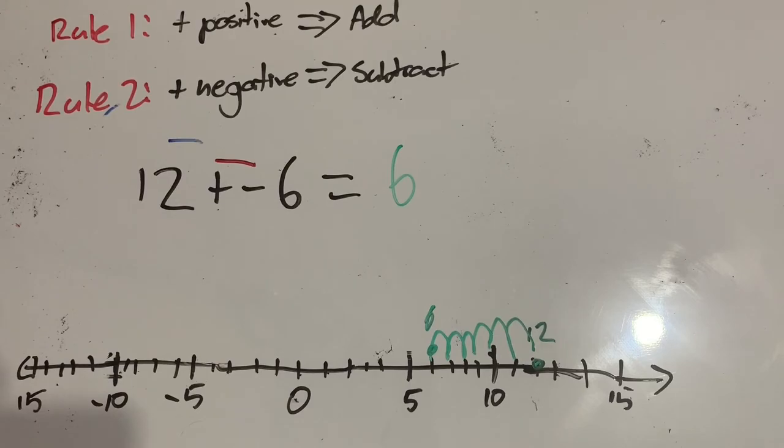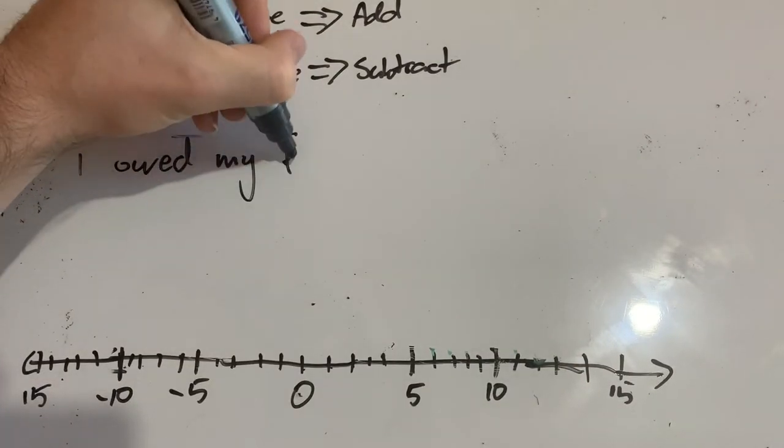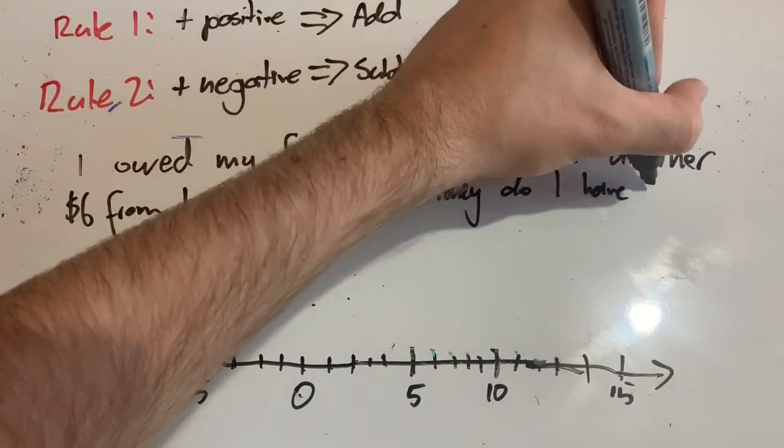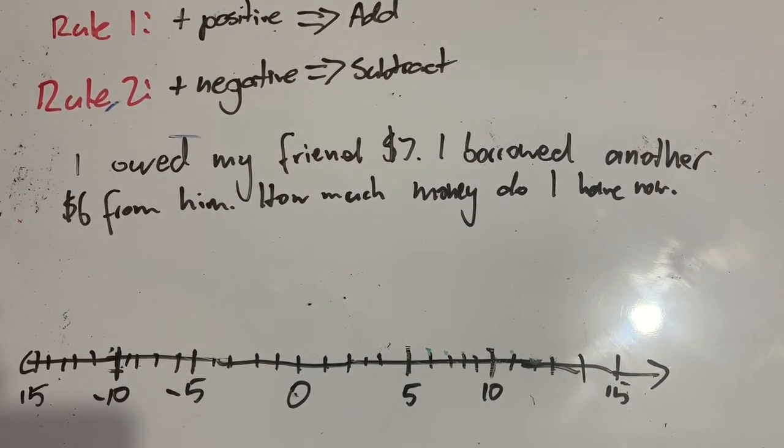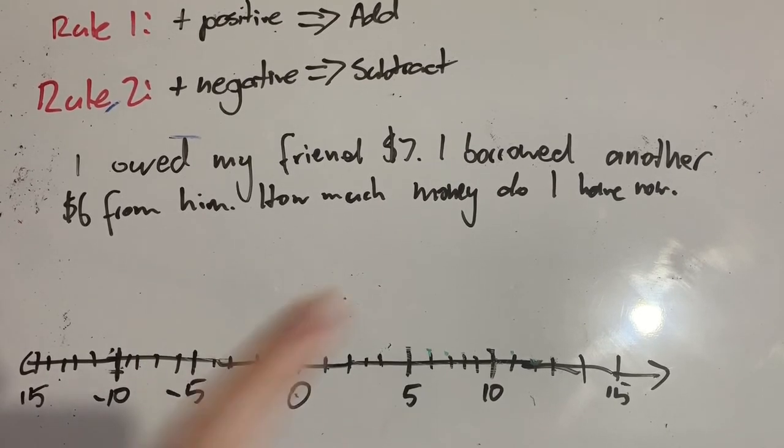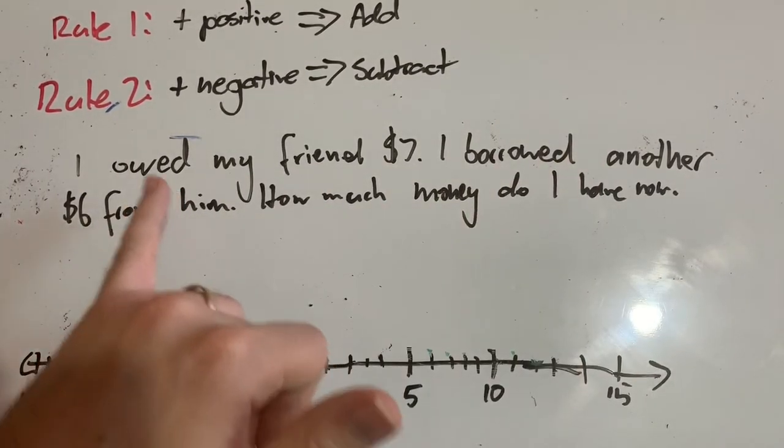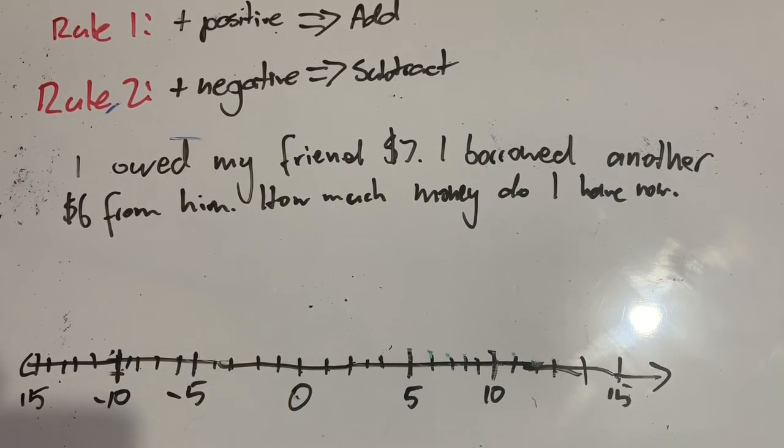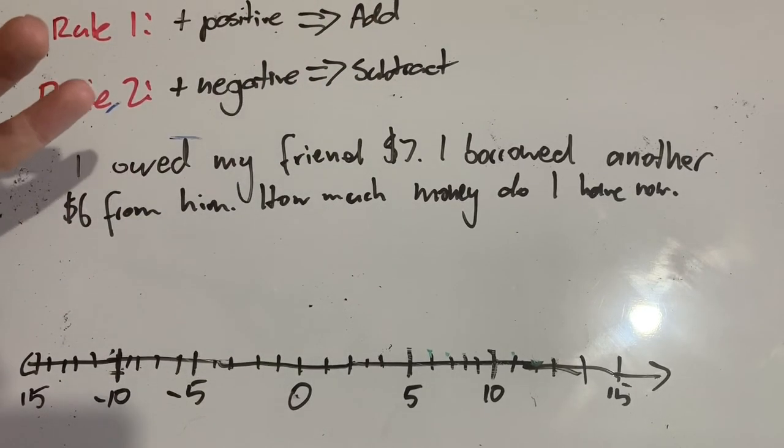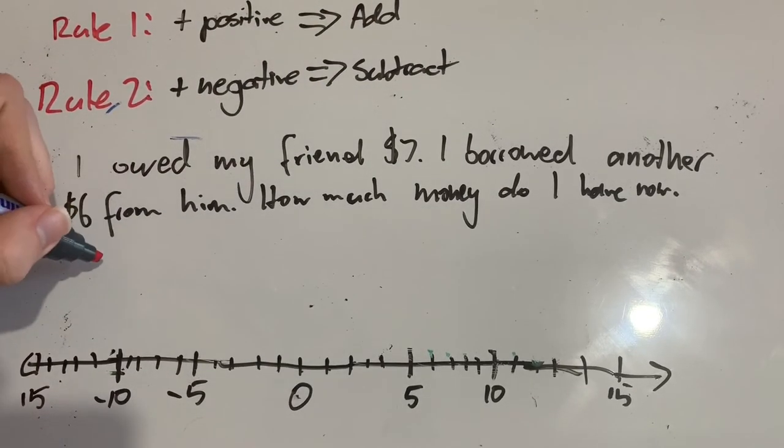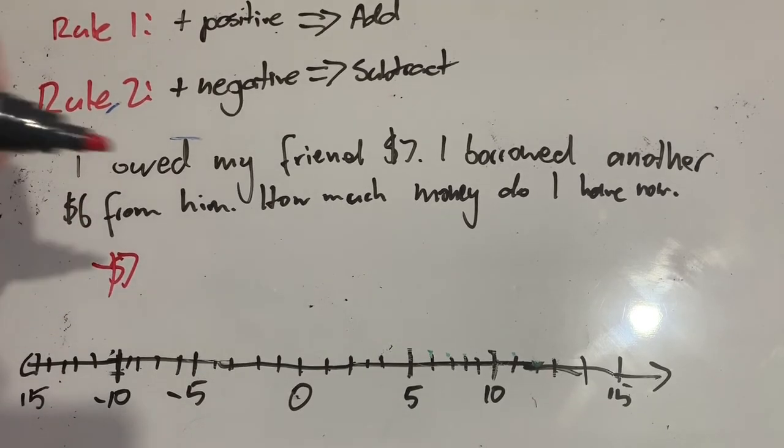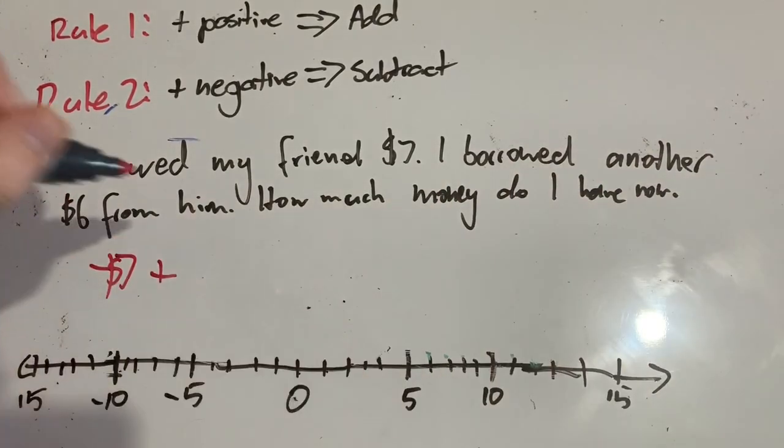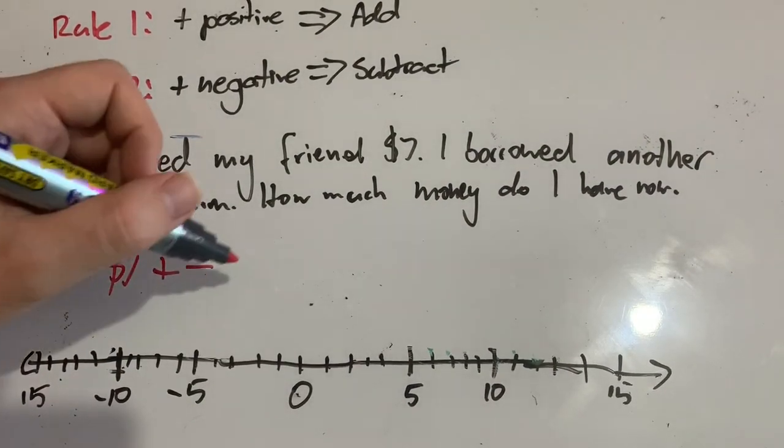Let's try a word problem. I owed my friend $7. I borrowed another $6 from him. How much money do I have now? We're talking how much money, and that could be negative money if I'm in debt, which it looks like I am, because I borrowed money and I owed him some money, and then I borrowed some more. So I owed him negative $7, and then I am going to add some more debt to me. So I borrowed another $6, so I added $6 of debt.